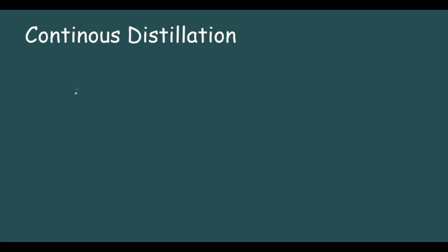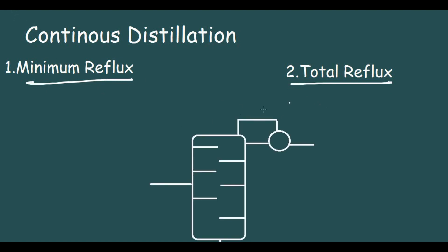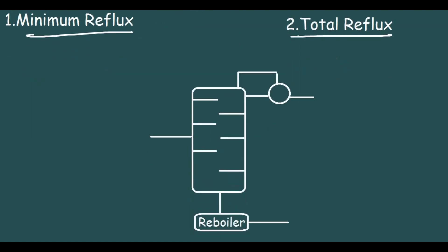In the previous video we saw how to construct the trace using the McCabe-Thiele diagram. In this video we are going to see the two different modes of operation for distillation: the minimum reflux and the total reflux. These are two different modes of operation of the distillation column. First we will discuss minimum reflux, then total reflux.